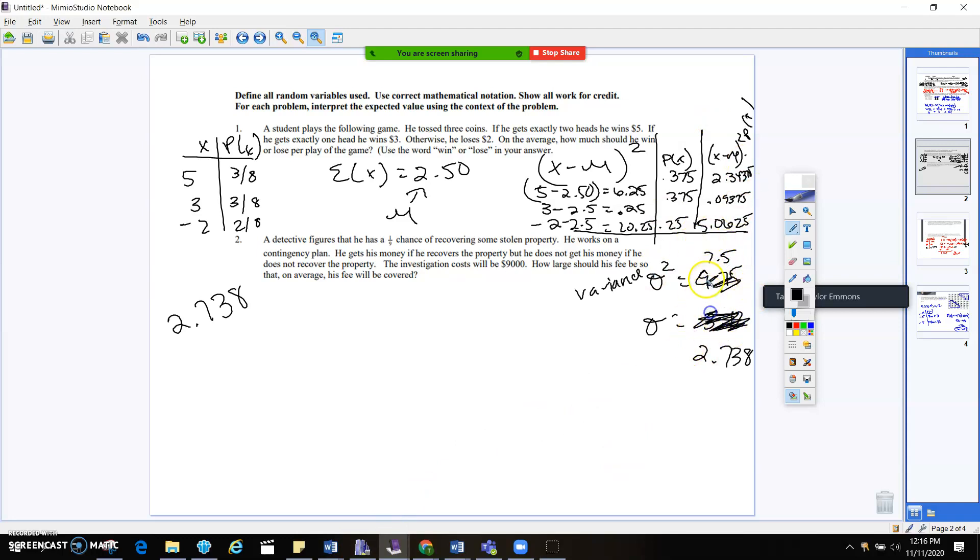And then when you take the square root of 7.5, that's going to give you 2.738. Cool? Okay, so let's try the next one.